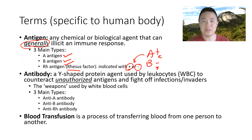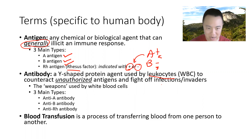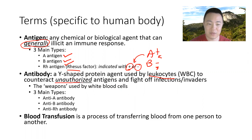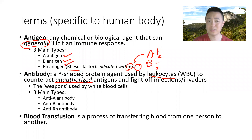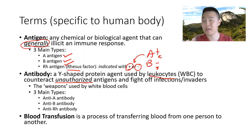Another term is antibody. This is a Y-shaped protein agent used by white blood cells — a.k.a. leukocytes — to counteract unauthorized antigens and fight off infections and invaders. For some people, the letter B antigen is fine, but for others they don't like the B antigen, and so antibodies will counteract unauthorized antigens that aren't supposed to be there. It's also worth noting that it's not only humans that carry these antigens — many other organisms on our planet use the same antigens too.